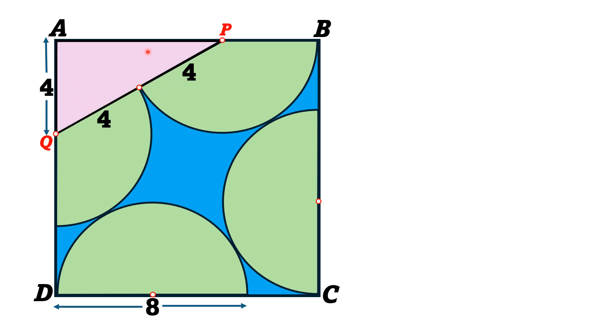Now, this is a right triangle. PAQ is a right triangle in which one leg is 4 units and hypotenuse is 8 units. Now, we find AP by using Pythagorean theorem.